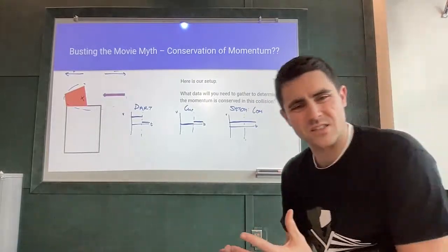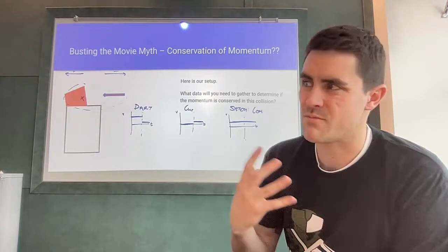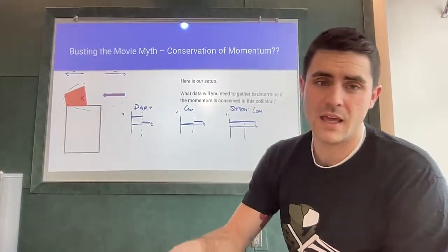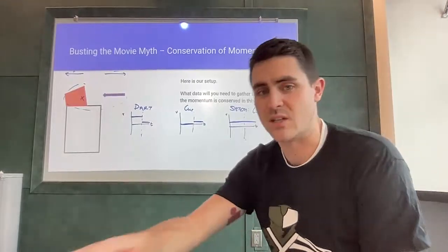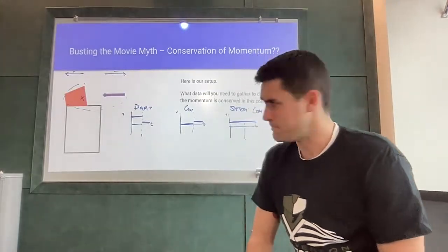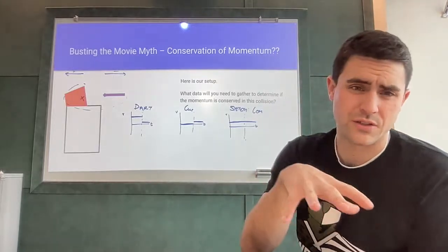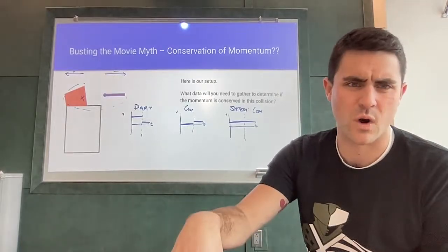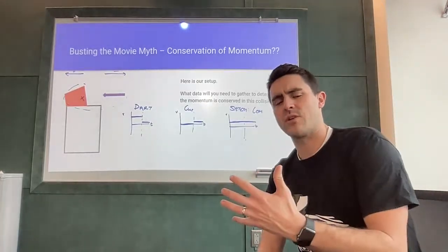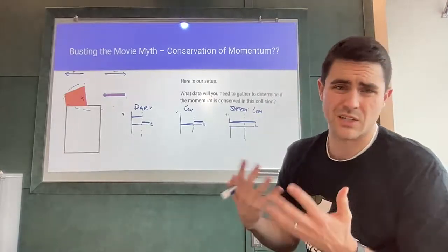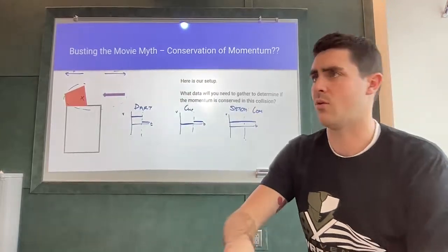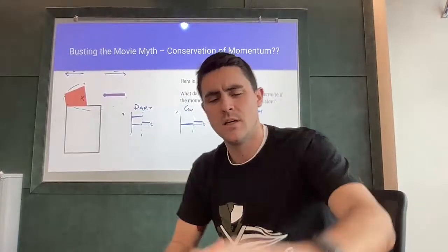Velocity graphs behave similarly to momentum graphs since momentum is the product of mass and velocity - if momentum decreases, it's because velocity decreases. But understand that velocity is not a conserved quantity, while momentum is a conserved quantity. I hope these graphs are helpful. Drop questions in the comments below, send me an email, or ask me in class. Until next time, see ya!